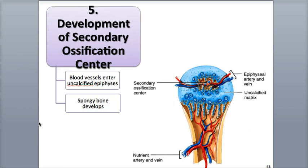Step 5: development of the secondary ossification centers occurs when branches of the epiphyseal artery enter the proximal and distal epiphyses. The process of bone formation at the ends of the developing bone is similar to the primary ossification centers. The big difference is that spongy bone remains in the middle of the epiphyses and no medullary cavities are formed.